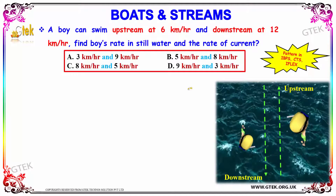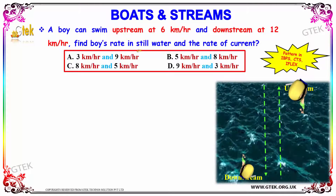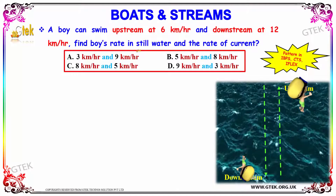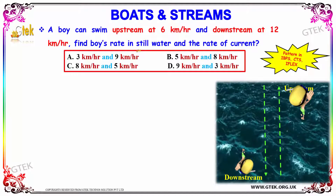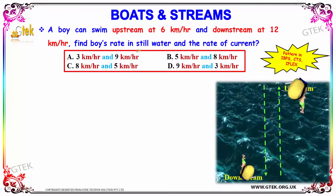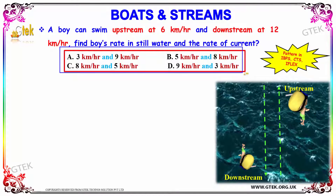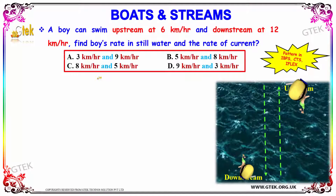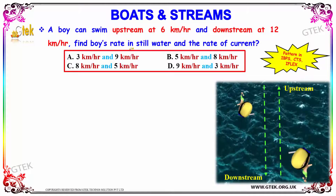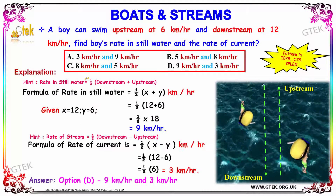Let us see our first example on boats and streams. It is given that a boat can travel upstream at 6 kilometers per hour and downstream at 12 kilometers per hour. You have to find the boat's rate in still water and the rate of current. These types of questions appear in IBPS, CTS, and IFLEX. The options are: (A) 3 and 9 km/h, (B) 5 and 8 km/h, (C) 8 and 5 km/h, (D) 9 and 3 km/h.